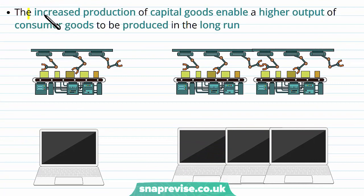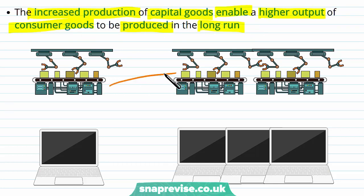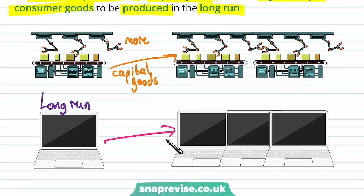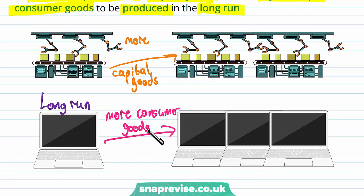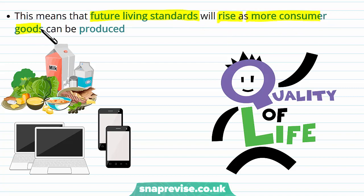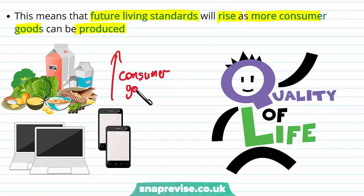However, the increased production of capital goods enables a higher output of consumer goods to be produced in the long run. When we are producing more capital goods, after those capital goods are produced, this will allow us to produce more consumer goods in the future. In effect, we are trading off fewer consumer goods in the present for more consumer goods in the long run — meaning our future living standards will rise and we gain a higher quality of life as a result.